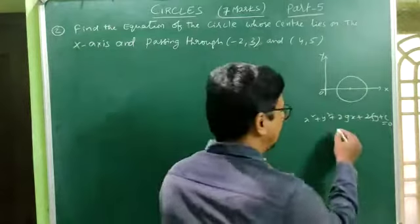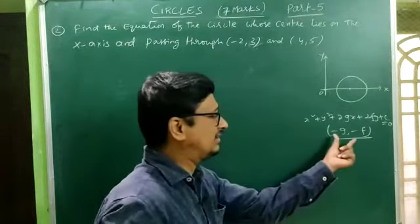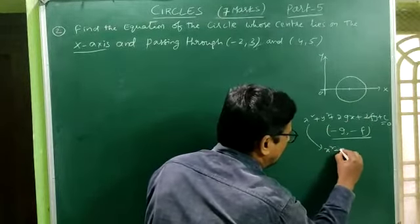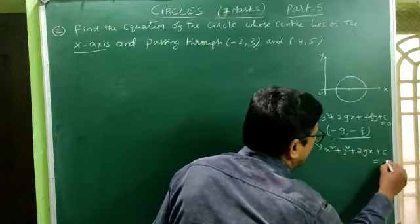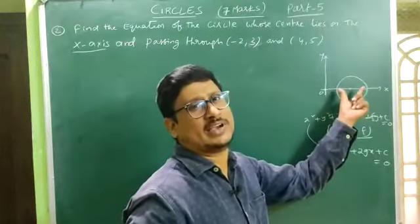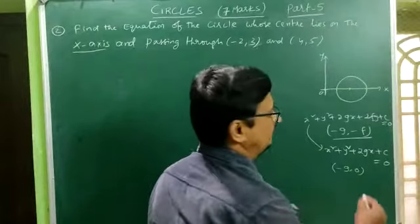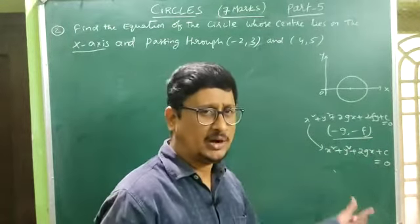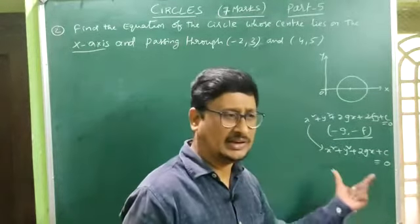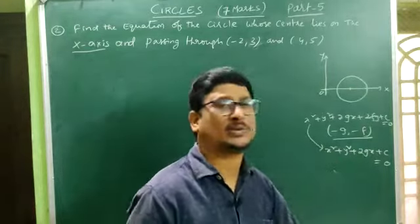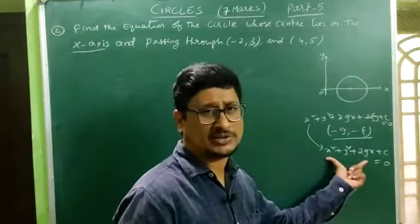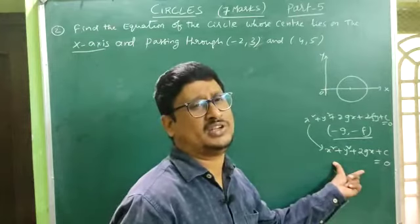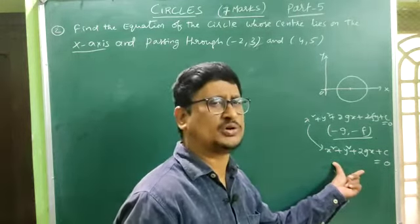The general equation of the circle is x² + y² + 2gx + 2fy + c = 0. The center is (-g, -f). Since the center lies on the x-axis, the y-coordinate of the center is 0, meaning f = 0. The equation becomes x² + y² + 2gx + c = 0, with center (-g, 0). Call this equation 1.